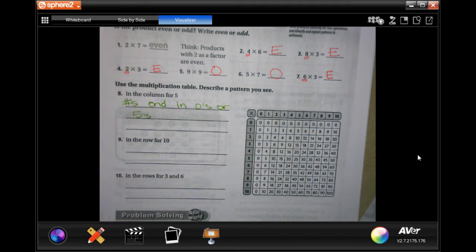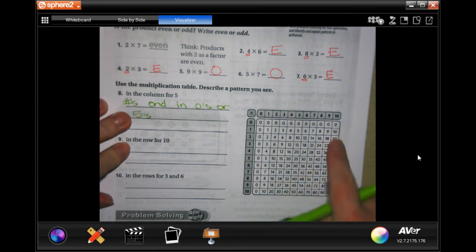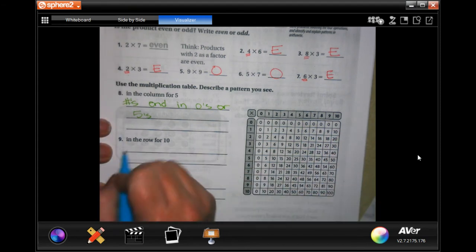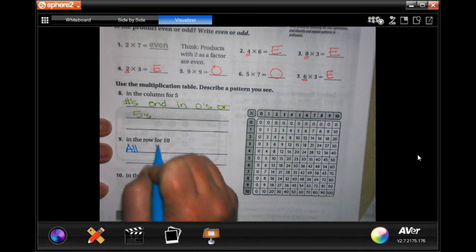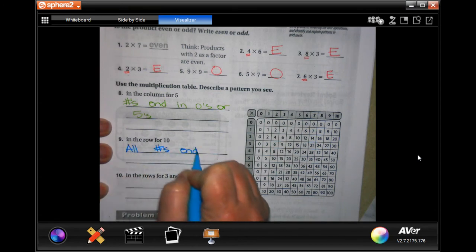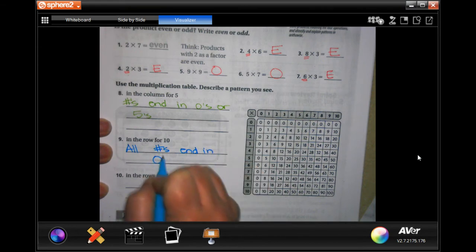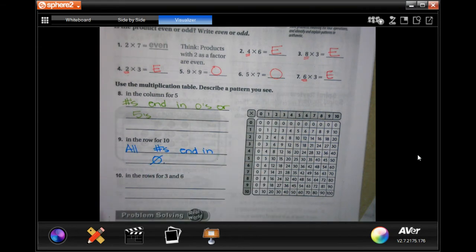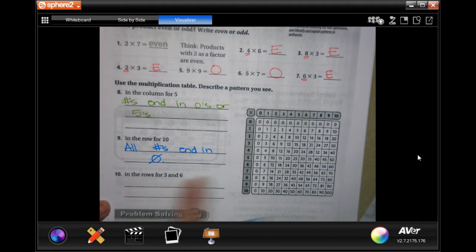Super easy y'all. In the row for ten you'll notice that all of the numbers end in zero. All numbers end in zero. You guys do rows for three and six, look down those numbers and see what the pattern is.